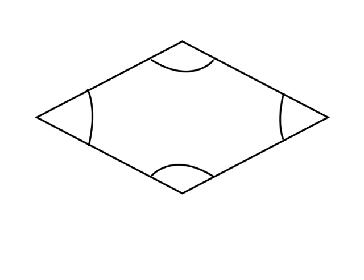Let me show you now why angles in a quadrilateral add up to 360 degrees. Let's see if we can understand where this comes from. What I've got here is a rhombus. What you can do to any quadrilateral is add a line that links the opposite corners, splitting it into two triangles, as you can see here.